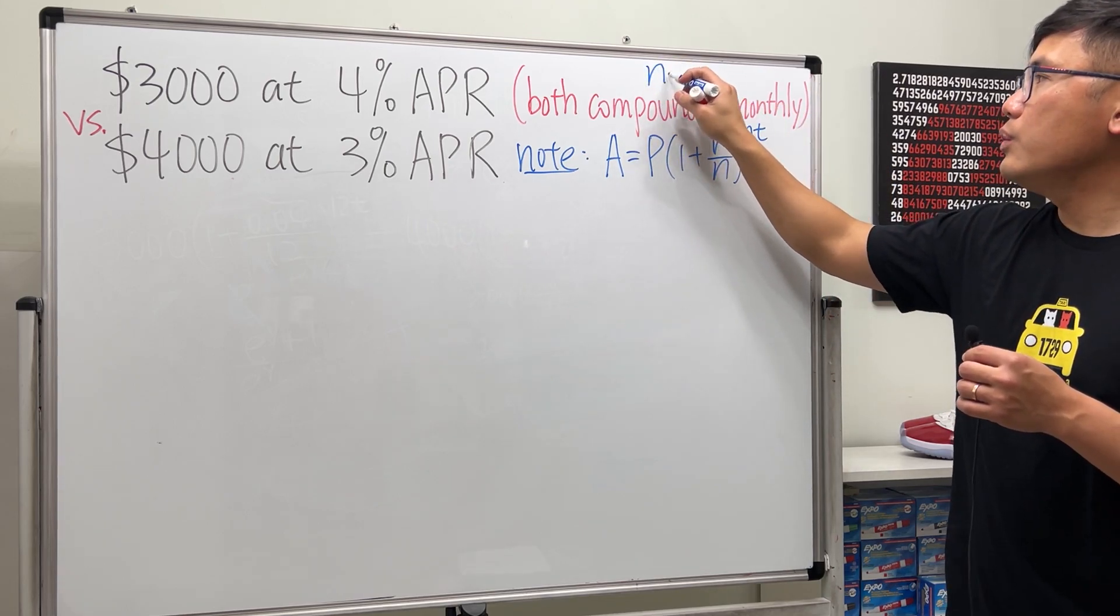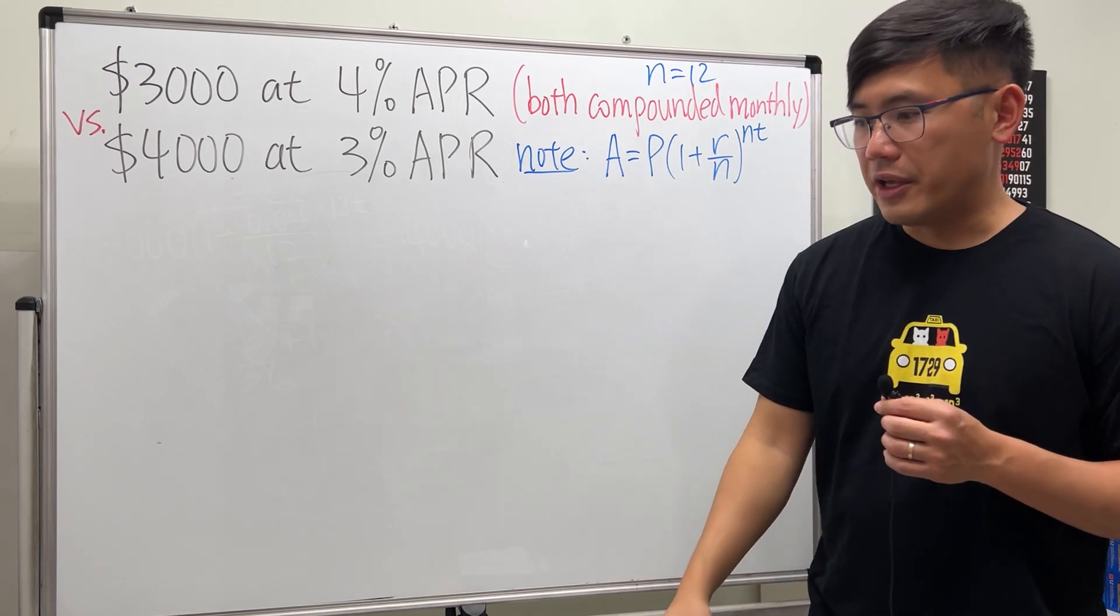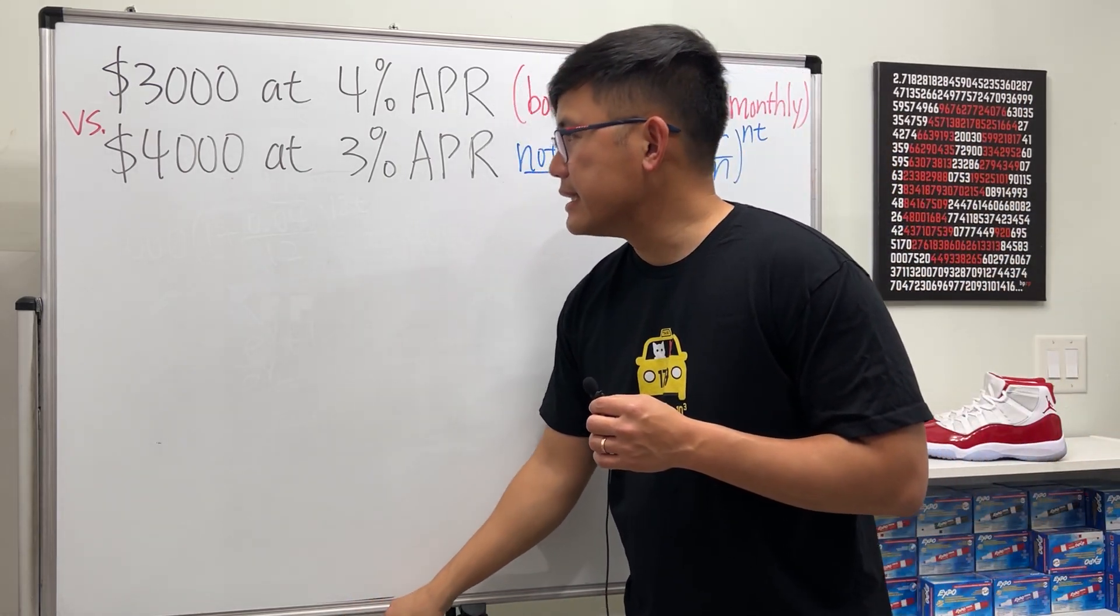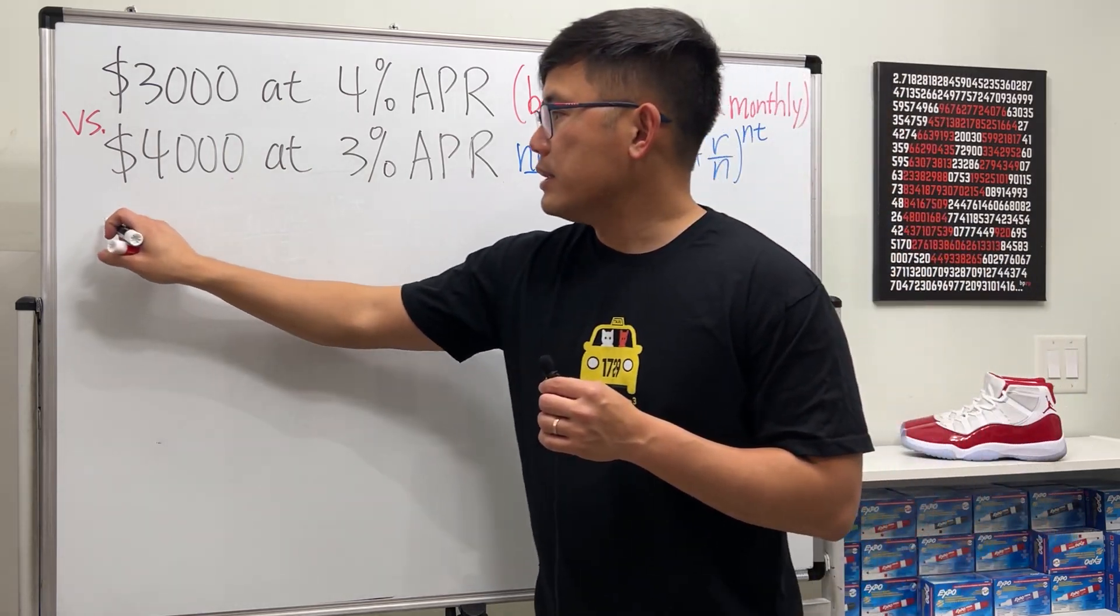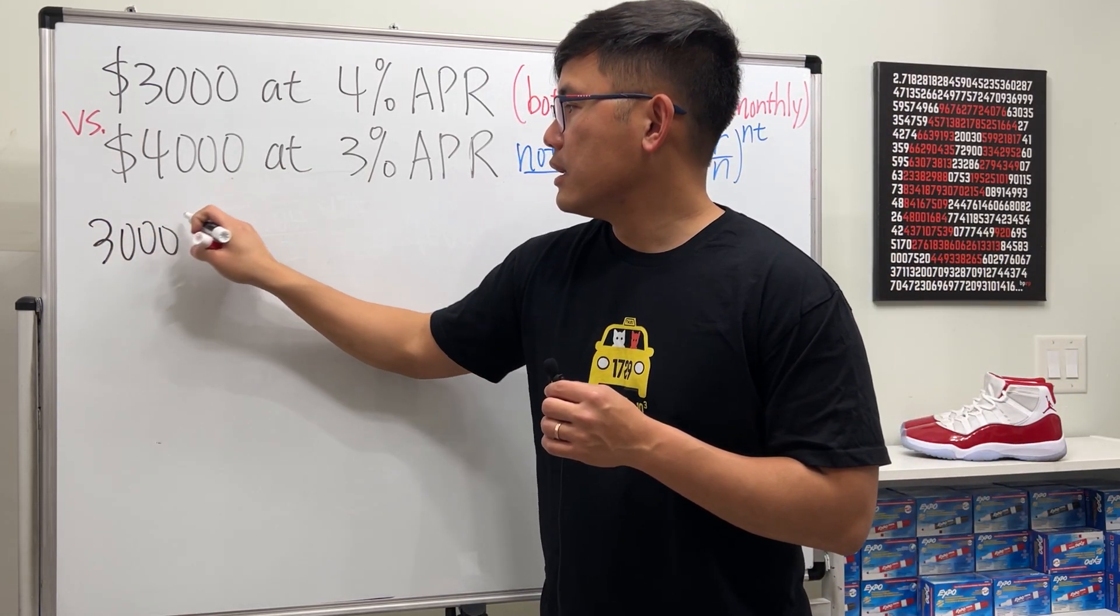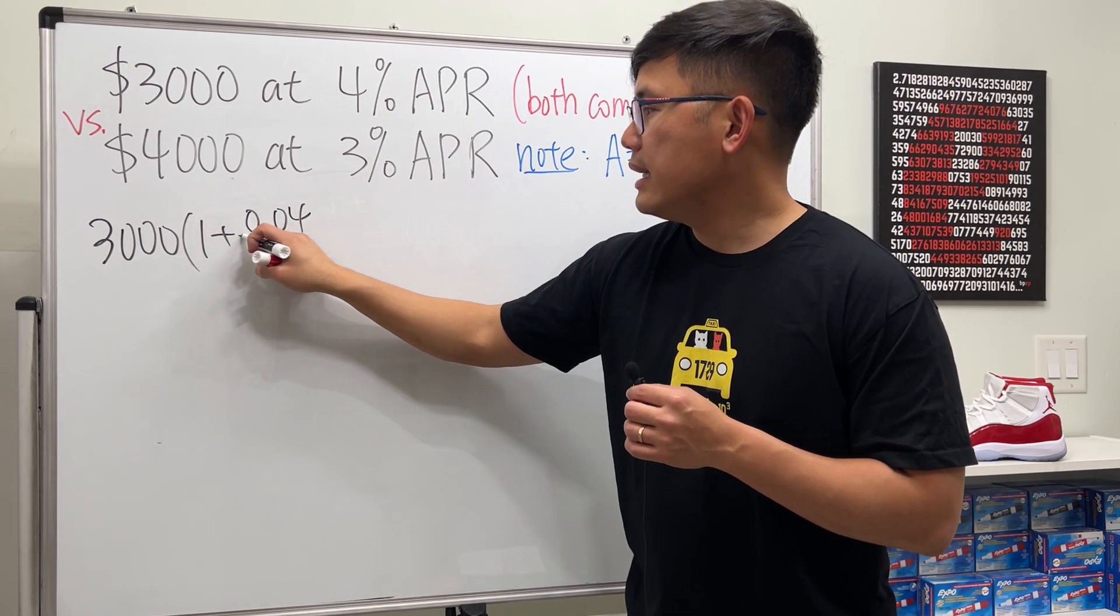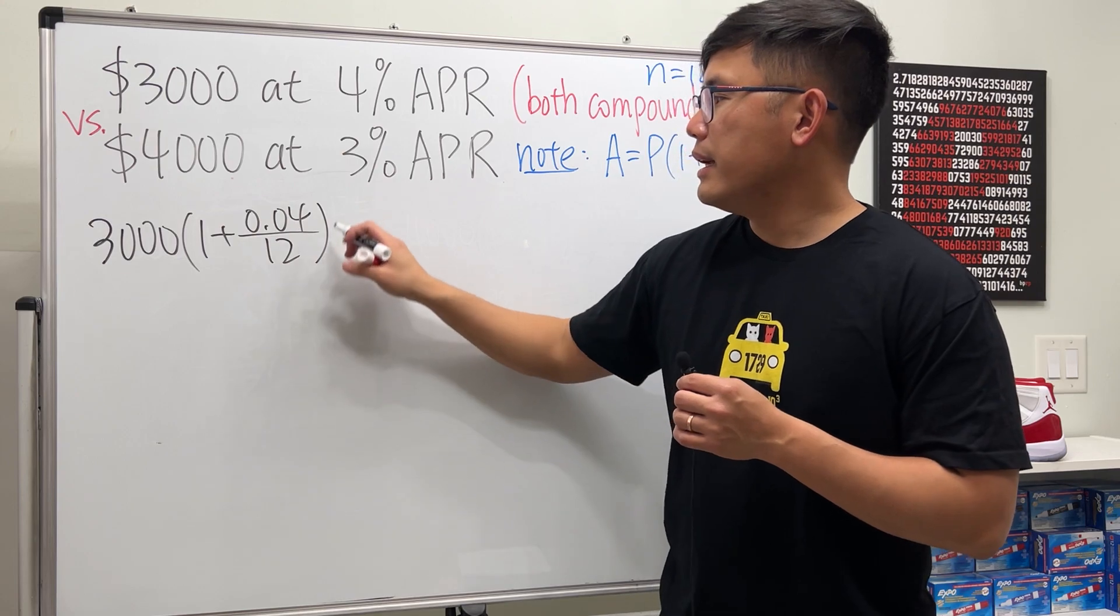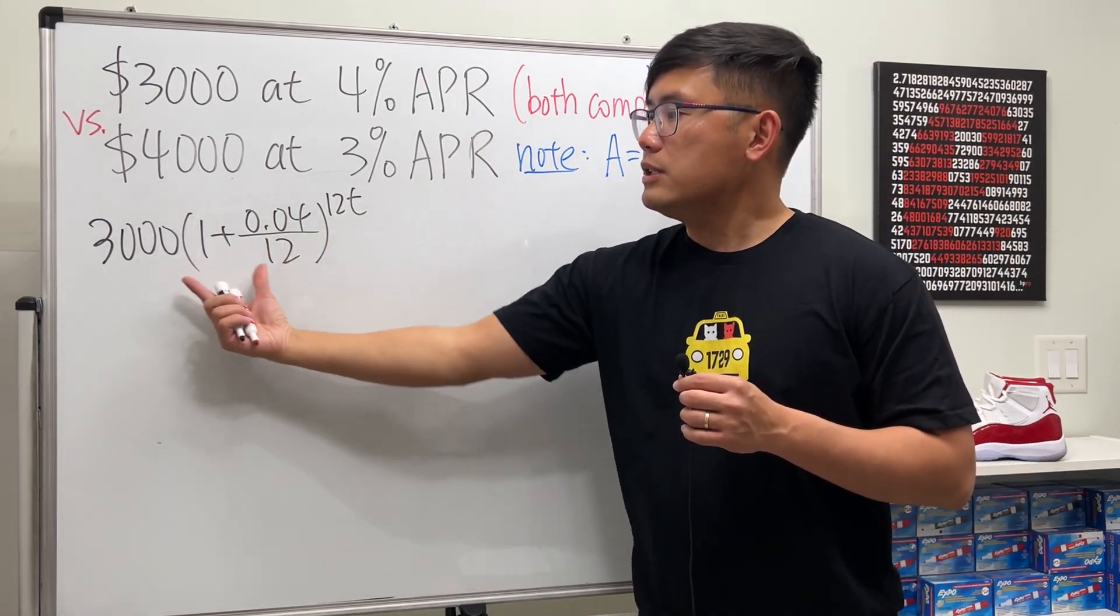Because these things are compounded monthly, n will be 12 - compounded 12 times a year. Now let's set up an equation for the first one. The principal is $3,000 times (1 + 0.04/12) raised to the 12t power. This will give you the amount of money you have in this account after t years.